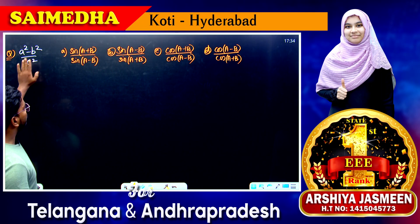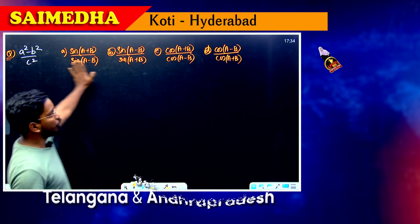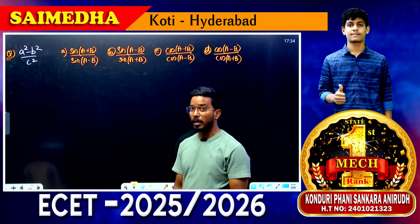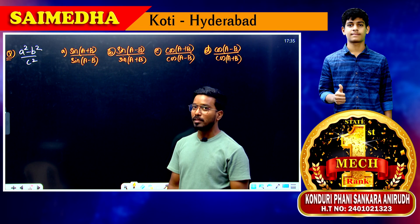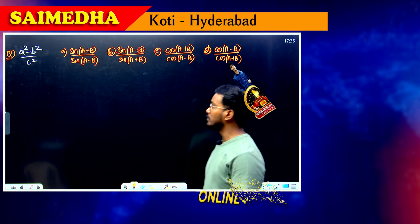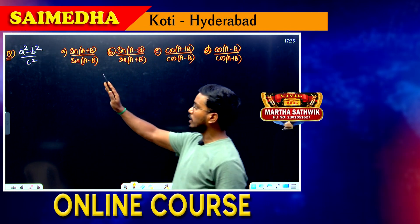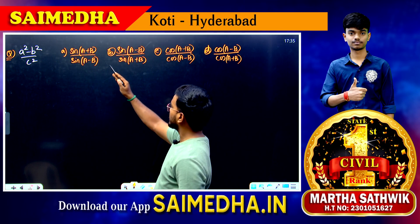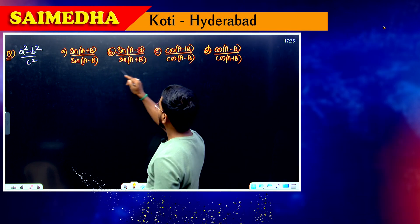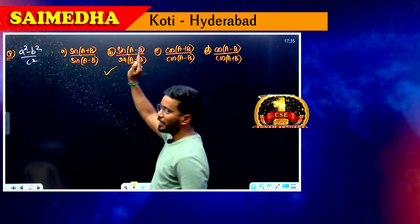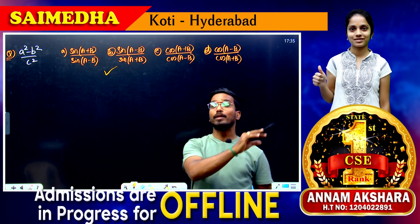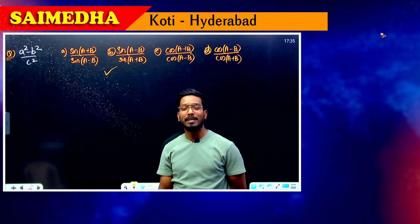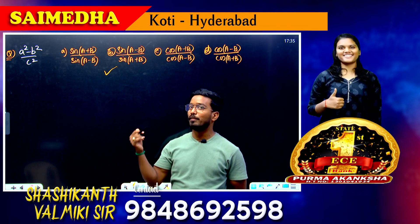Question number one: given on the board is a² minus b² divided by c², with four options. Think for three seconds and you should be able to get the answer within three seconds. The correct answer is option B — that's how easily you are going to be solving this question in the ESET examination.